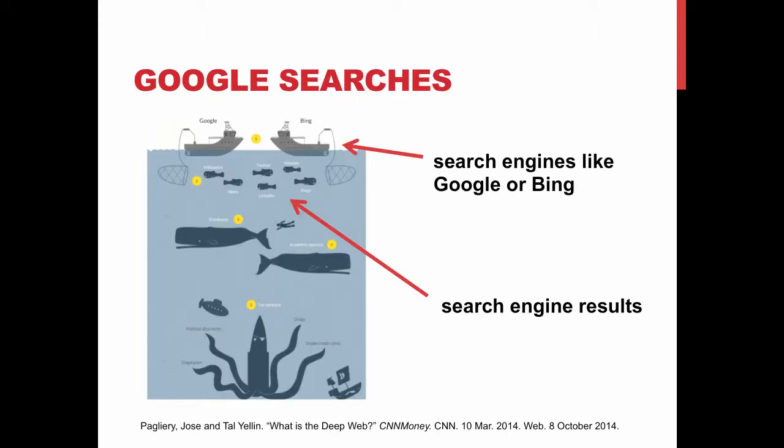A few weeks ago, we talked about this graphic showing how Google only searches the free web — that's less than 1% of the Internet. We also talked about how Google misses the deep web: the stuff below those search engine results, databases, academic journals, etc.